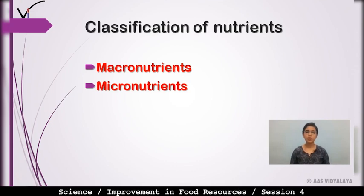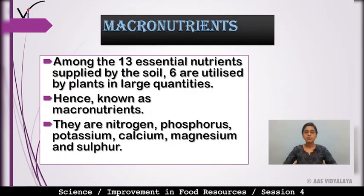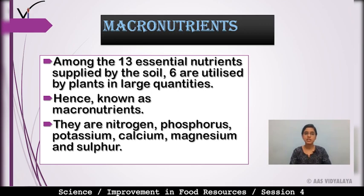Nutrients are of two types: macronutrients and micronutrients. Among the 13 essential nutrients supplied by soil, 6 are utilized by plants in large quantities — these are known as macronutrients.